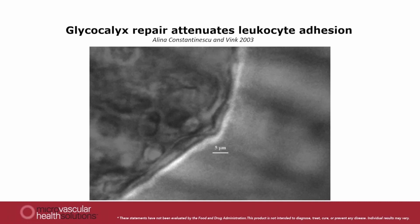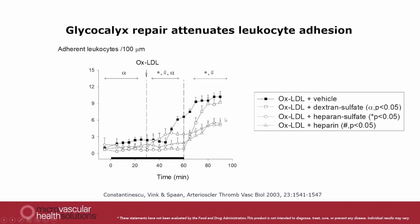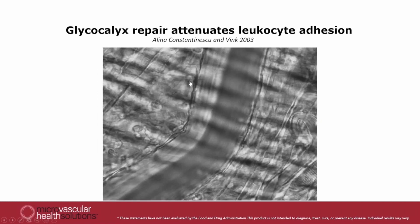After rebuilding the glycocalyx, we then measured how many leukocytes stick to the vessel wall. We found that introducing heparan sulfate or heparin polysaccharides, which are very similar, could lower the number of leukocytes sticking to the wall by 50%. We were even more pleased when we realized that this 50% reduction was actually due to a 100% reduction on the site that we treated — because we injected the therapeutic on the left side of the vessel wall, and the bloodstream took the polysaccharides downstream, never reaching the other side.